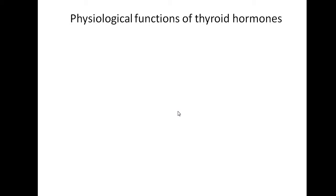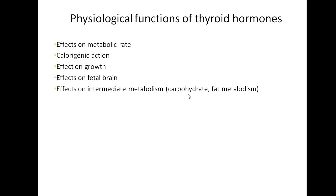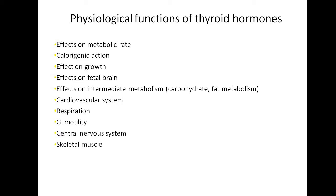Thyroid hormones are necessary for the functioning of almost all cells and tissues in the body. The basal metabolic rate is controlled by thyroid hormones, which also have a calorogenic action — that is, increased body temperature. They are required for normal growth and for normal development of the fetal brain and nervous tissue. They affect intermediate metabolism including carbohydrate and fat metabolism. Regarding the cardiovascular system, both deficiency and excess of thyroid hormones can cause arrhythmias. Thyroid hormones also affect respiration, GI motility, the central nervous system, and skeletal muscle. Excess thyroid hormones can cause skeletal muscle tremors.